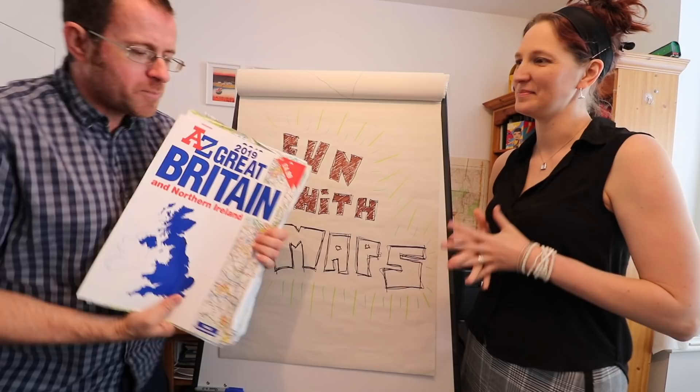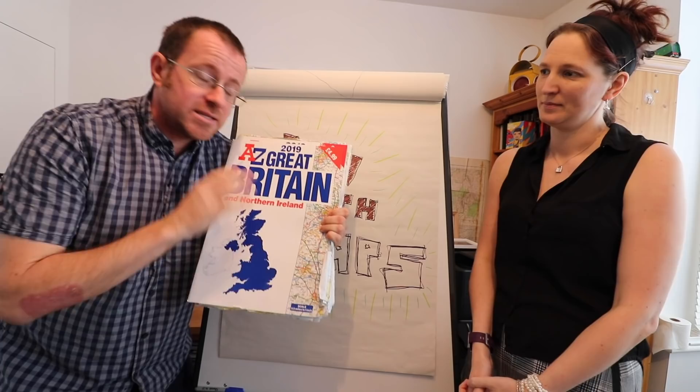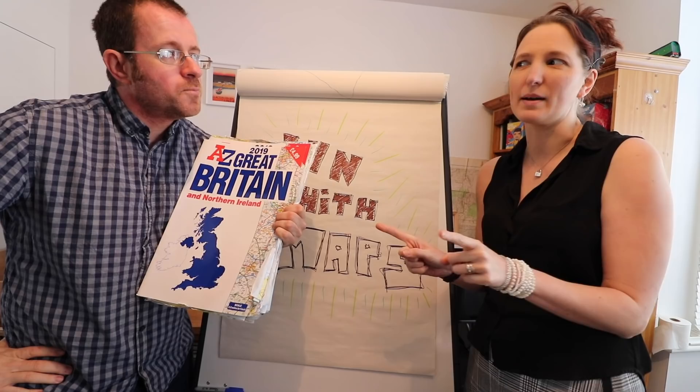So if you pick up any modern atlas, and obviously we don't all use atlases these days, road atlases, we tend to use sat-nav, but same principle. Everything on it is precise. It gets you from A to B. It does exactly what it says on the tin. It's perfect. It's to scale. But it wasn't always quite like that, was it? No.